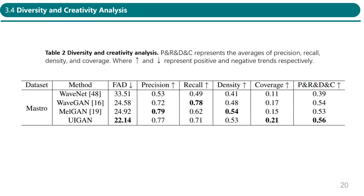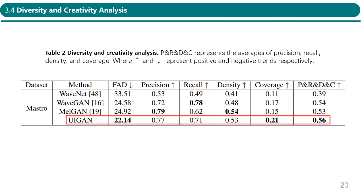Table 2 displays the diversity and creativity results of the generated music. Although we found that the proposed method did not perform as well as other methods in precision, recall, and density, the proposed method achieved significant results in FAD and coverage as well as overall creativity and diversity. For example, UI-GAN achieves a mean FAD value of 22.14, the highest coverage of 0.21, and the highest overall creativity and diversity index of 0.56. Compared to MIR-GAN, UI-GAN has shown significant improvement in FAD, recall, coverage, and overall creativity and diversity, indicating the important role of humans in music synthesis.